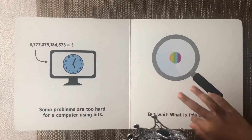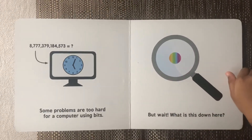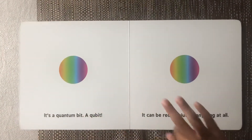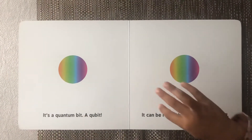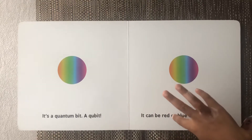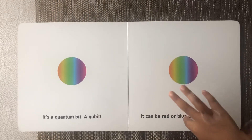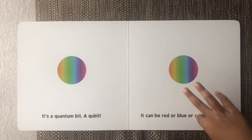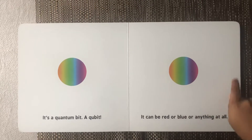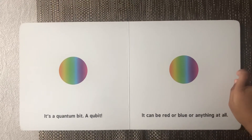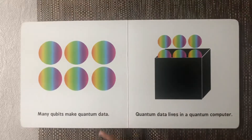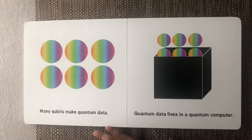What is this down here? It's a qubit — a quantum bit. It can be red or blue, or anything at all.